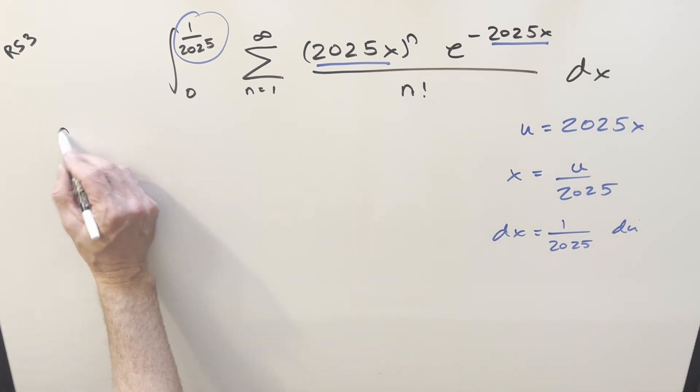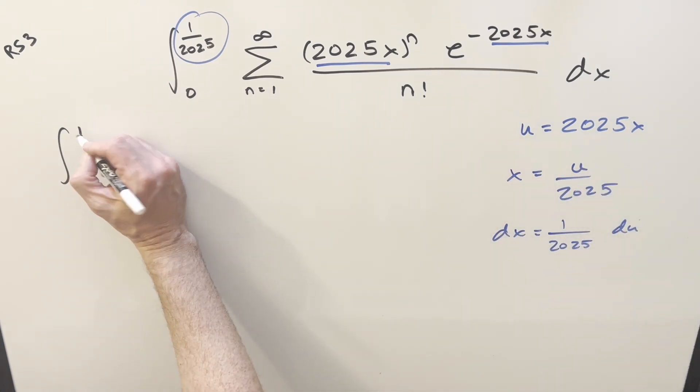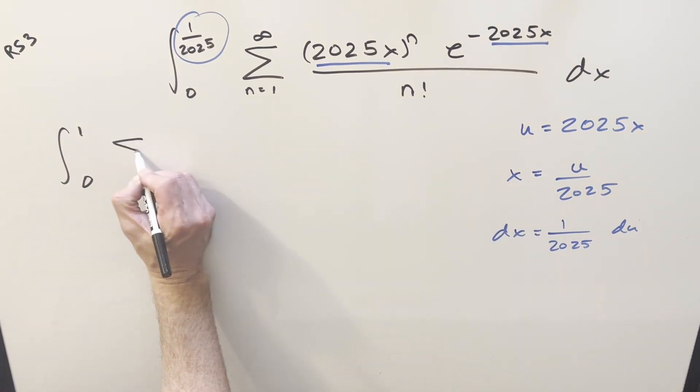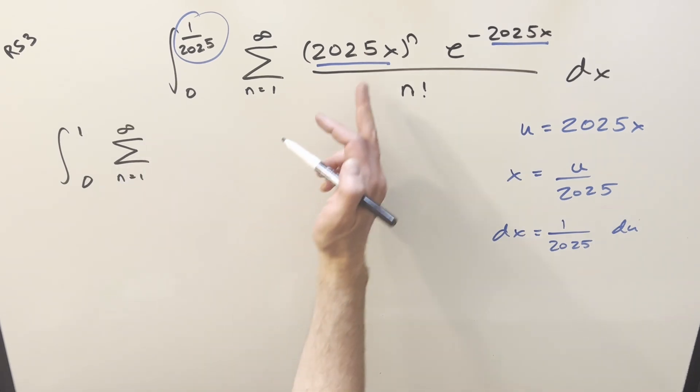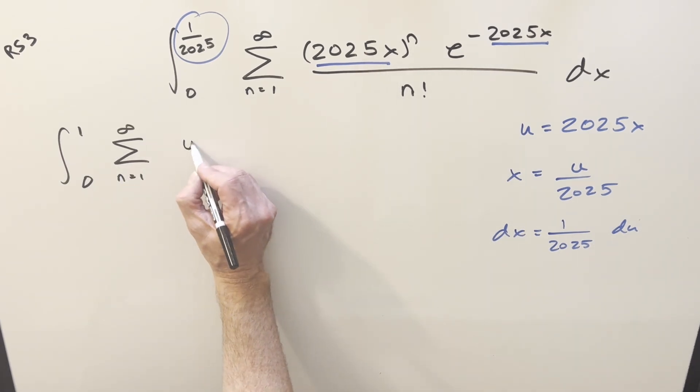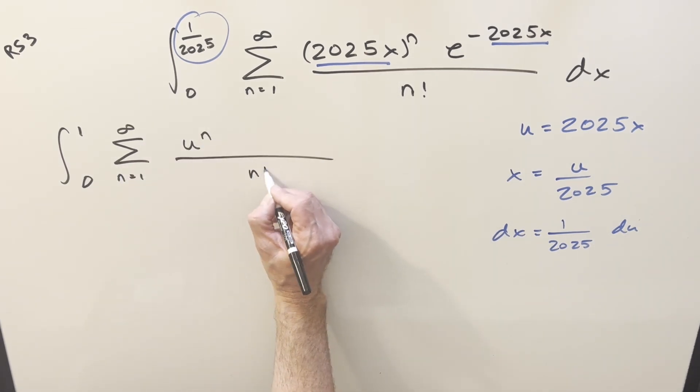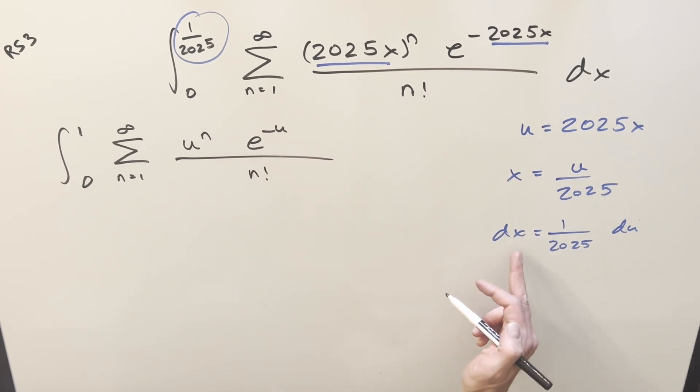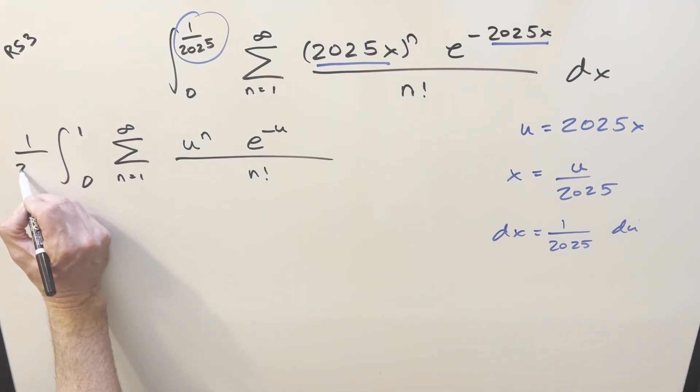So we'll go ahead and substitute. When I plug this in here, that's just going to be one. So that's really nice, simplifying the bounds. Plug in zero, we get zero. Then we're going to do the substitution inside the sum. This thing now is just going to become u to the n. The n factorial doesn't change. This becomes e to the minus u. And then dx is this.